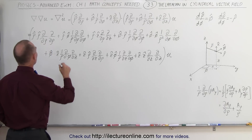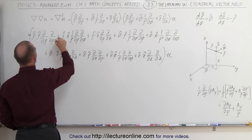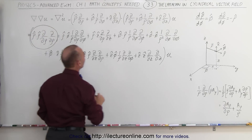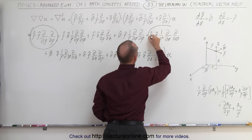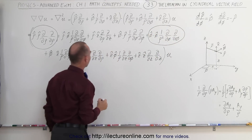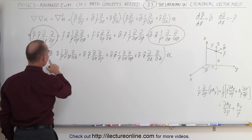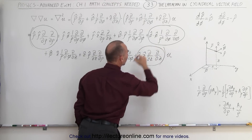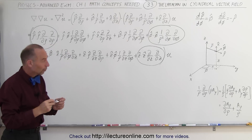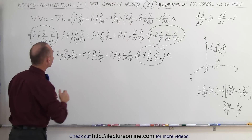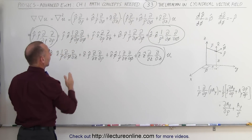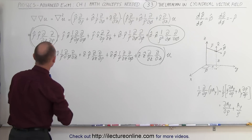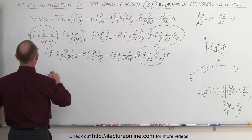The terms that survive are the following — let me circle them. The first term (ρ̂·ρ̂) survives, the φ̂·φ̂ term survives, and the ẑ·ẑ term survives. All other terms go to zero because they involve a dot product between two perpendicular unit vectors.